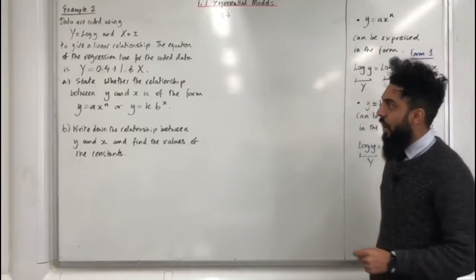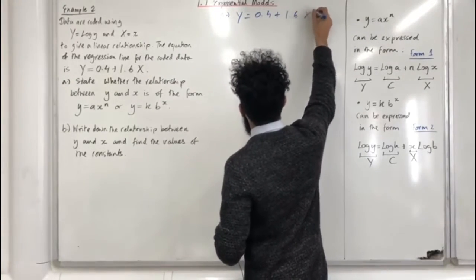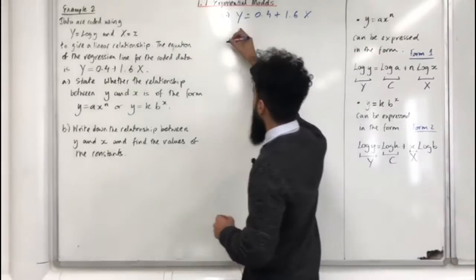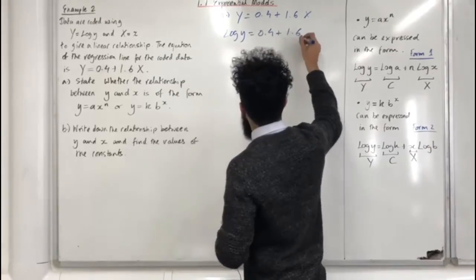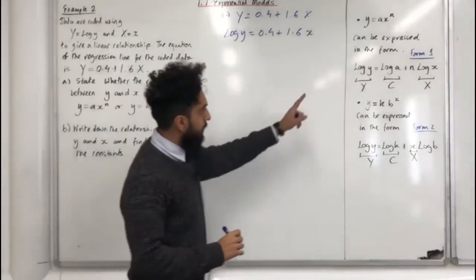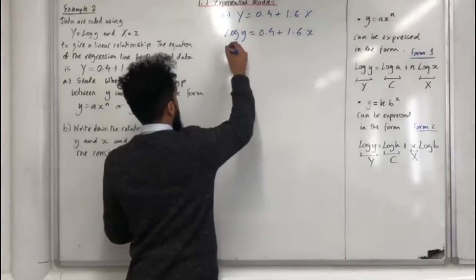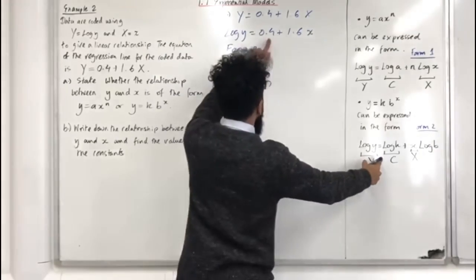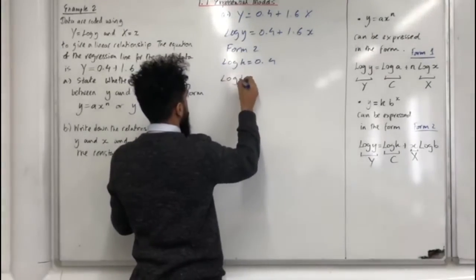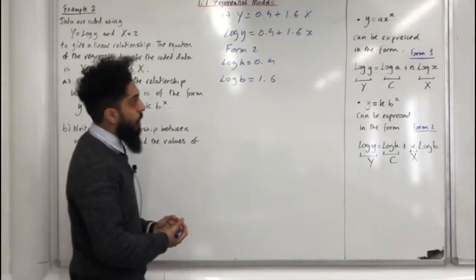Let's have a look at Part A. To find the correct relationship, we start off with capital Y equal to 0.4 plus 1.6 capital X. The coding used for this question is capital Y equal to log y and capital X equal to x. So I can replace capital Y with log y and capital X with x. Looking at what form this equation follows — comparing it with the two forms — I can see that this equation will follow form 2. The log k is 0.4 and the log b is 1.6. Because this equation follows form 2, we can conclude that the relationship between y and x will be of the form y equal kb to the power x.